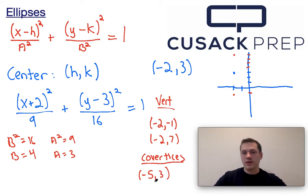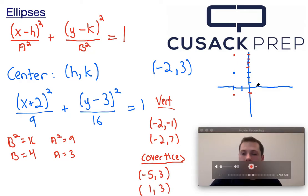I would end up at negative 5 comma 3. If I go right 3 units from negative 2, 3, I would end up at the point 1 comma 3. So my co-vertices are going to be here and here.